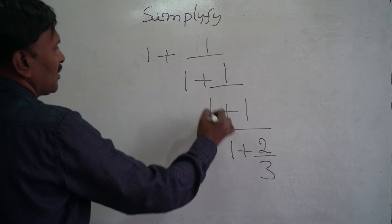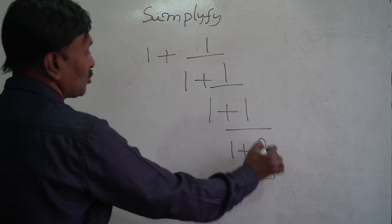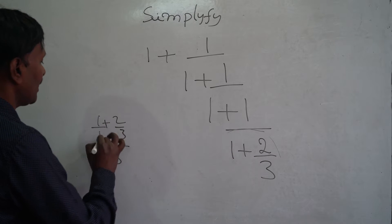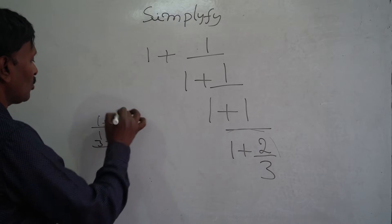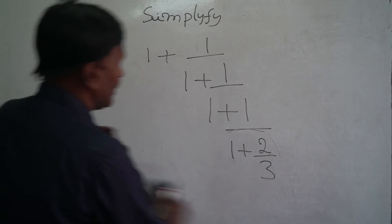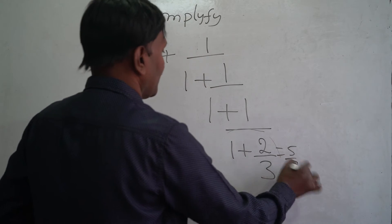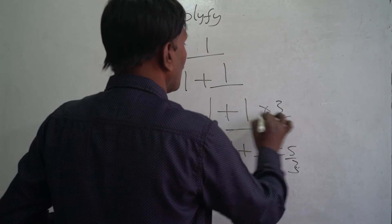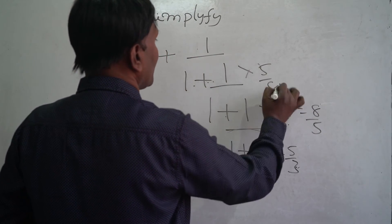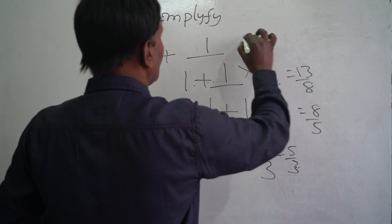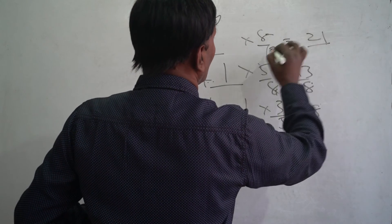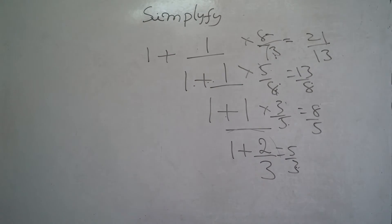Here the third example: 1 plus 1 by 1 plus 1 by 1 plus 1 by 1 plus 2 by 3. The same procedure applies. 1 plus 2 by 3: 3 plus 2 is 5 by 3. Then 3 by 5. 1 plus 3 by 5 is 8 by 5. Then 5 by 8. 1 plus 5 by 8 is 13 by 8. Then 8 by 13. 8 plus 13 is 21 by 13. This is the output.